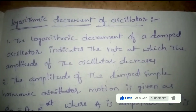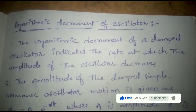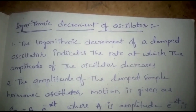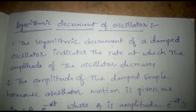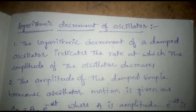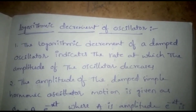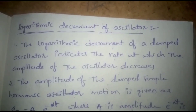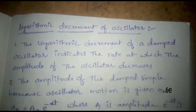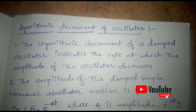We are discussing the logarithmic decrement of an oscillator. The logarithmic decrement of a damped oscillator indicates the rate at which the amplitude of the oscillator decreases.